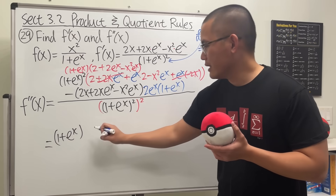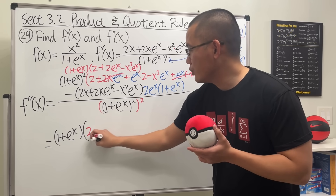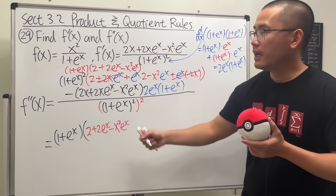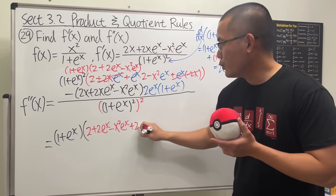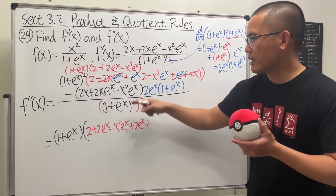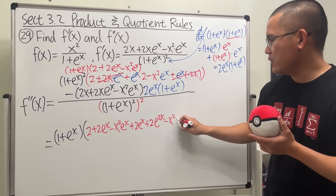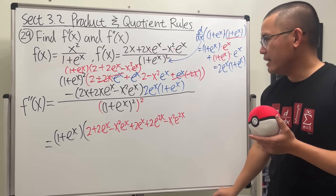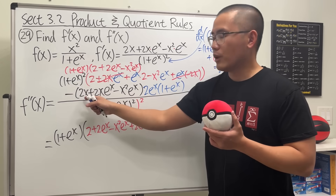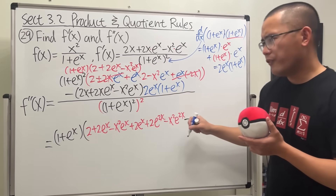Now I'll multiply out and put the result in parentheses. 1 times everything gives 2 + 2eˣ − x²·eˣ. Then eˣ times everything: plus 2eˣ, then eˣ·eˣ = e^{2x}, so plus 2e^{2x}, and then minus x²·e^{2x}. For the second part, we distribute the minus sign: this times that gives minus 4x.